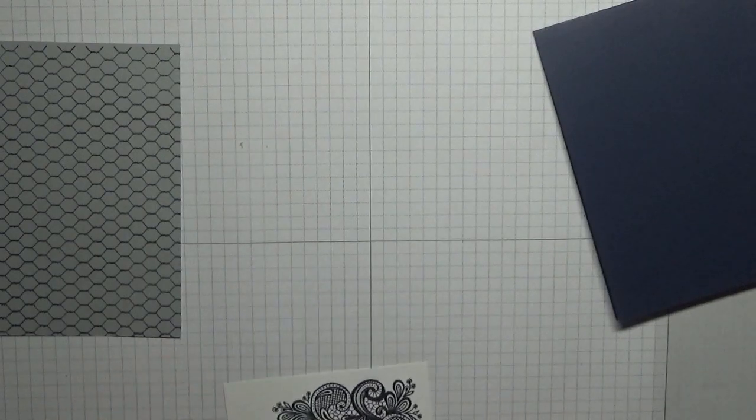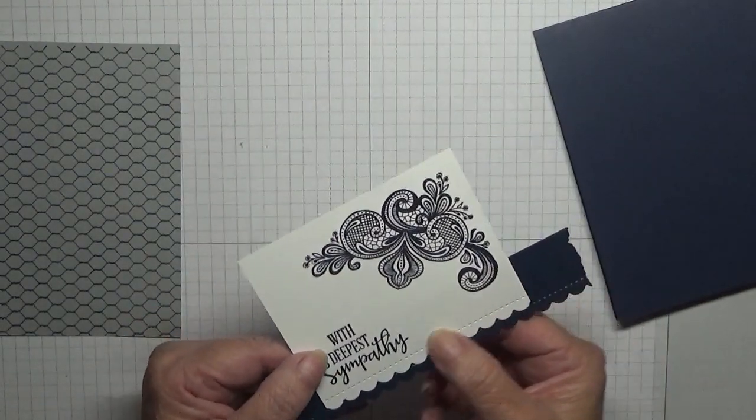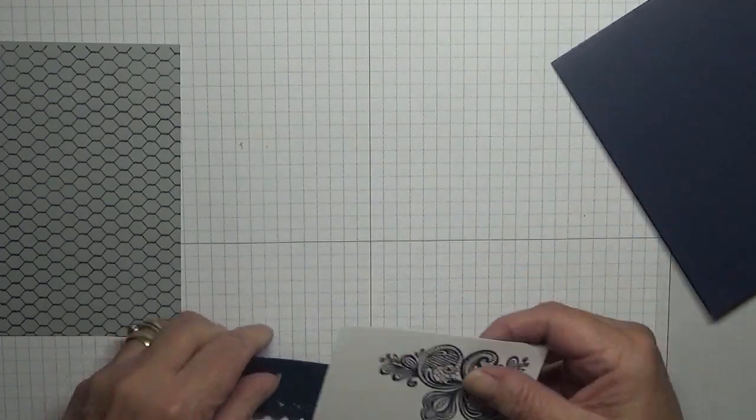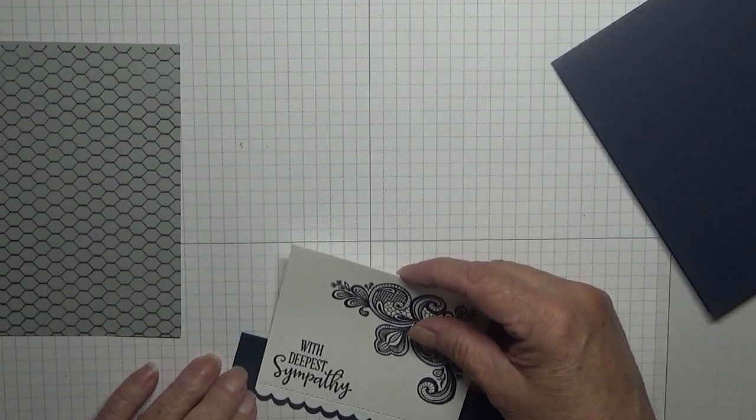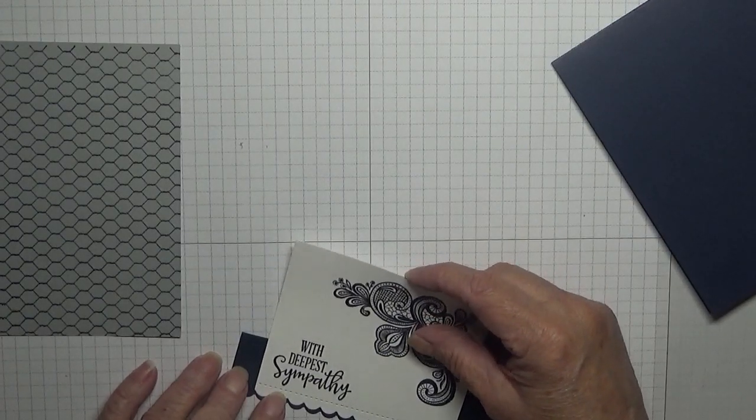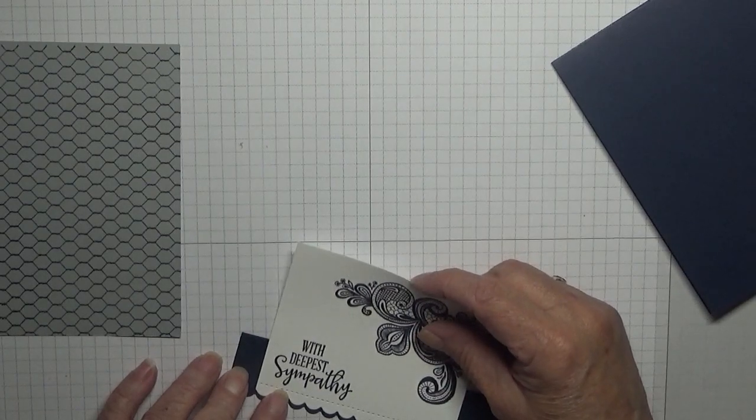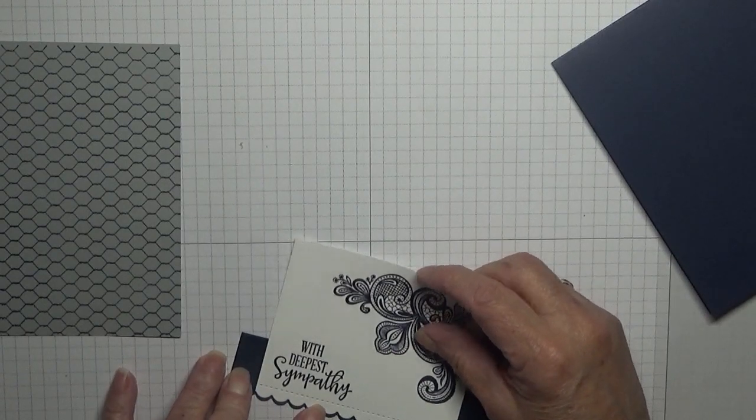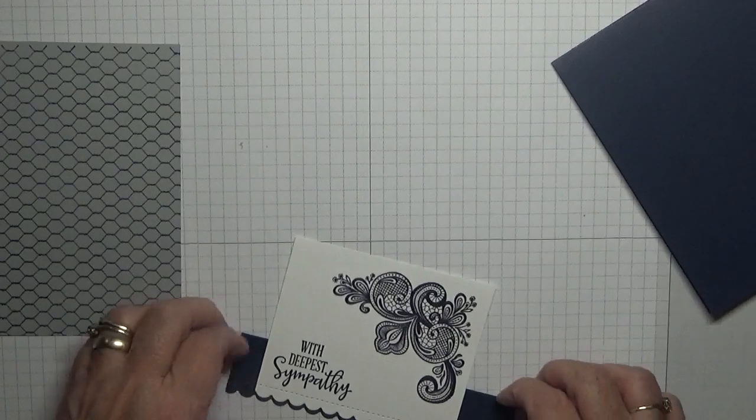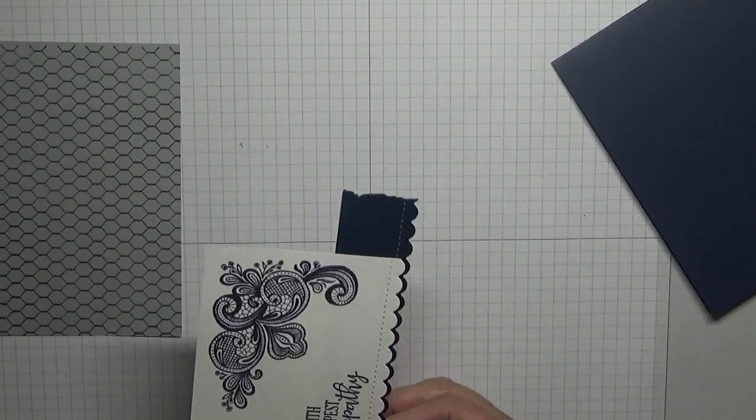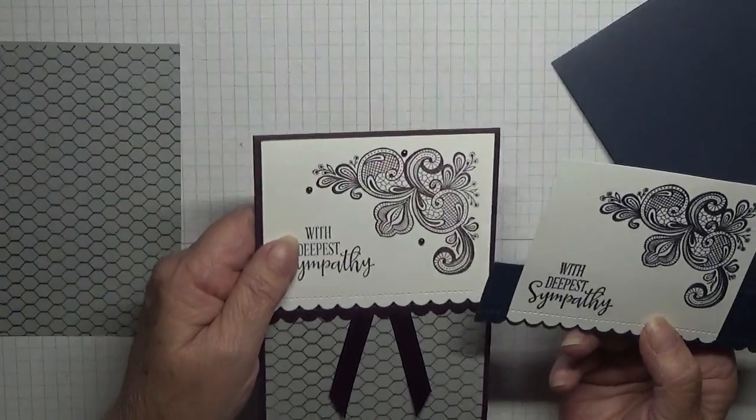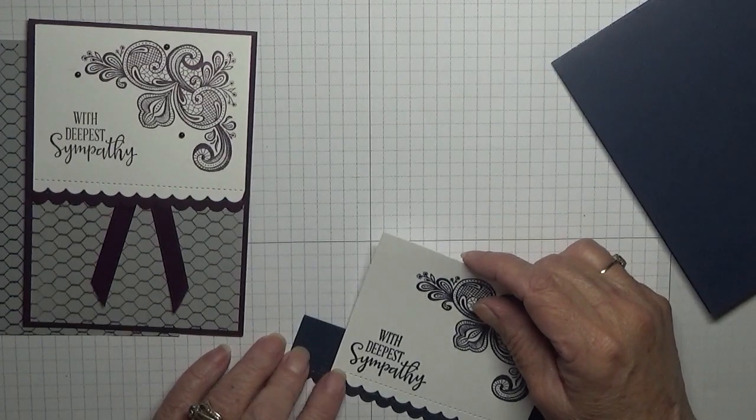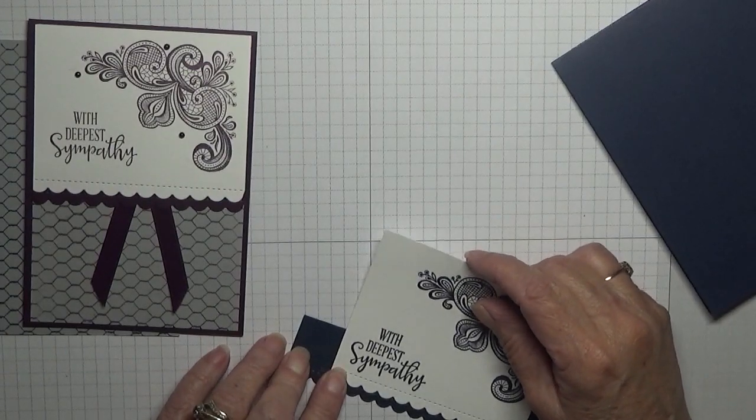And we're going to line up, I'm using the stitched edge on the blue to line it up. That's too much. Just gives us a little border. That one I did it like I had it the first time.